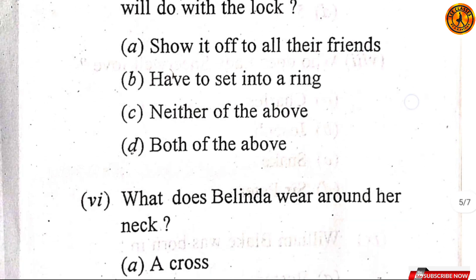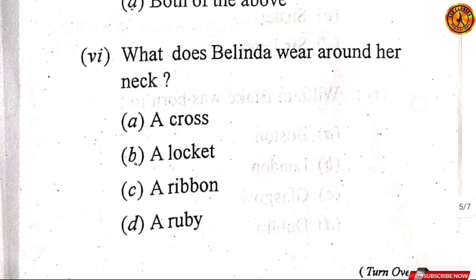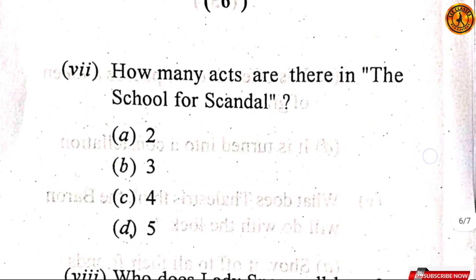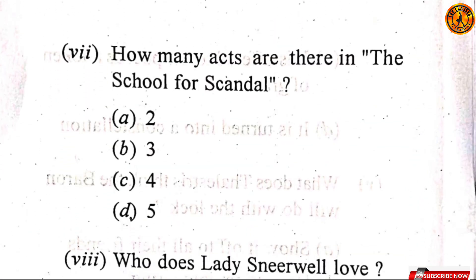Question number six: What does Belinda wear around her neck? Yeh bhi question mein puchha hua tha aur bataya hua tha objective type question mein. Option A — a cross. How many acts are there in the School for Scandal? Option D — five. Yeh bhi question mein diya tha.